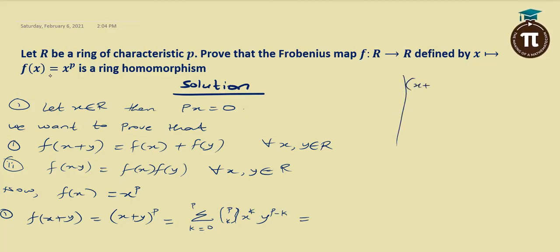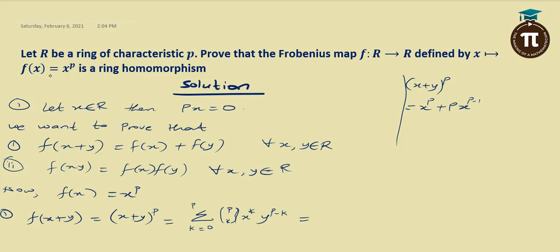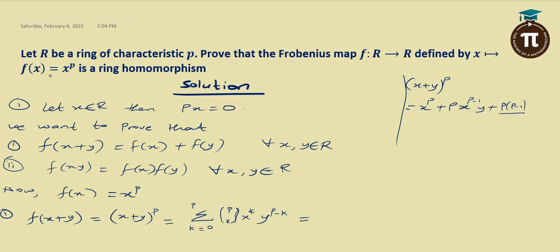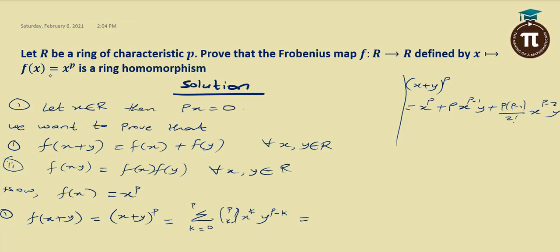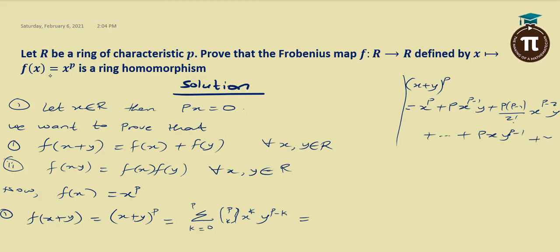Let me quickly show you something here. If I expand X plus Y raised to power P, it is equal to X raised to power P, plus P times X raised to power P minus 1 times Y, plus P(P−1)/2! times X raised to power P minus 2 times Y squared, and it goes on like that. When you get to the second-to-last term, you have P times X times Y raised to power P minus 1, then plus Y raised to power P. That is the normal binomial expansion.